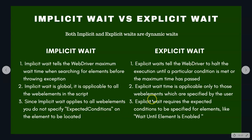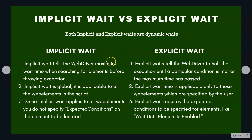However, with explicit wait you need to provide the expected condition for the specified web elements. So if you are trying to set up an explicit wait for a text box, radio button, or submit button, you have to specify the explicit wait for that particular web element. That is the key difference between implicit wait and explicit wait.